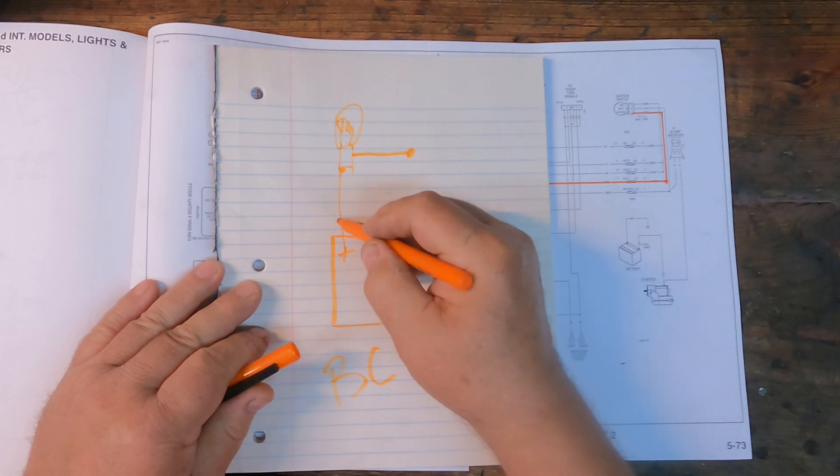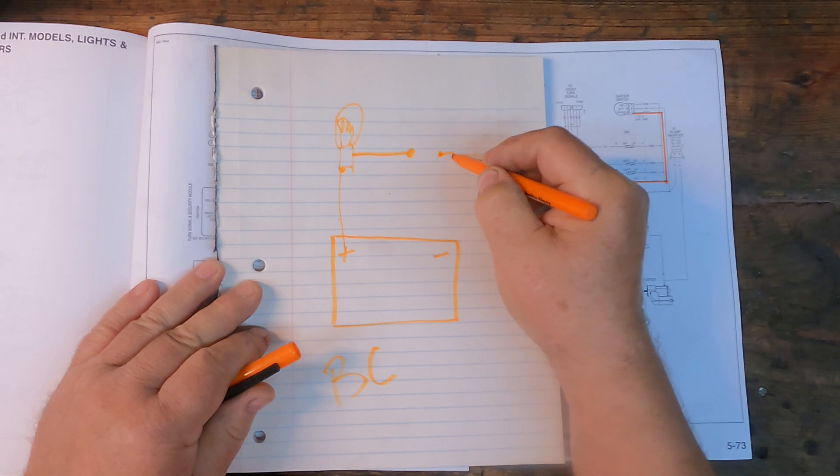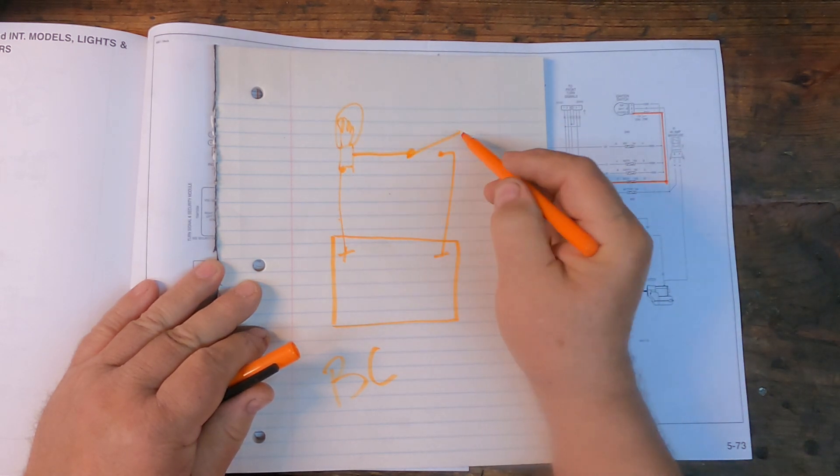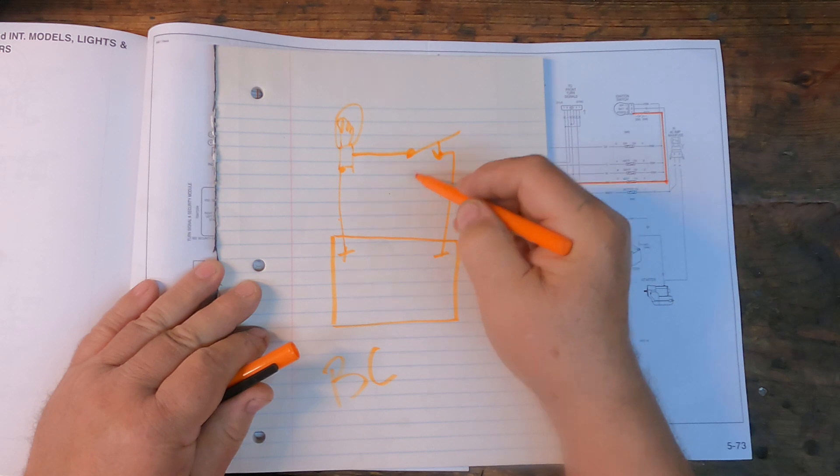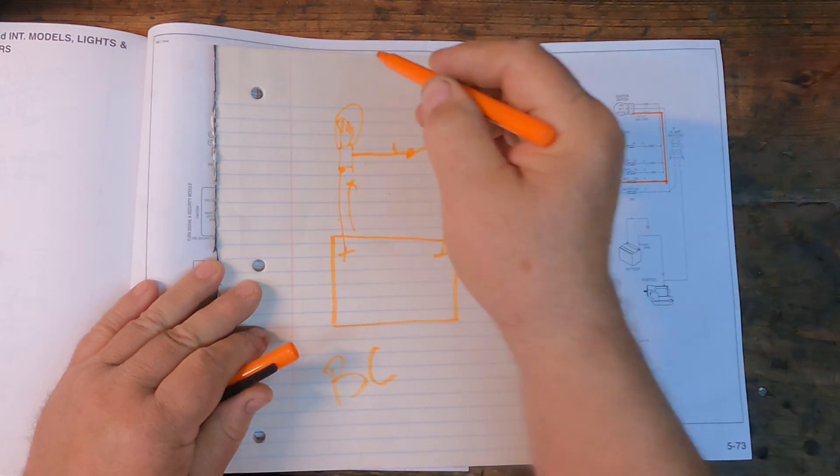And the other side of the light bulb goes to maybe a switch or maybe the switch is over here, it really doesn't matter. And then the other end of the wire went to ground. So to turn that light bulb on, you took a switch and you closed it and electricity flowed around the circuit and the light bulb glowed.